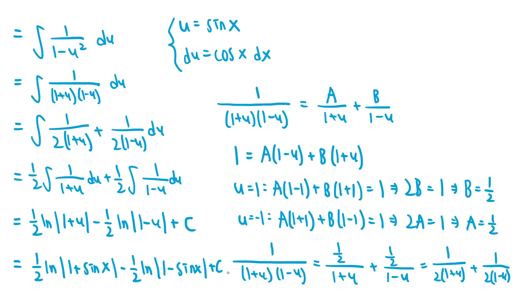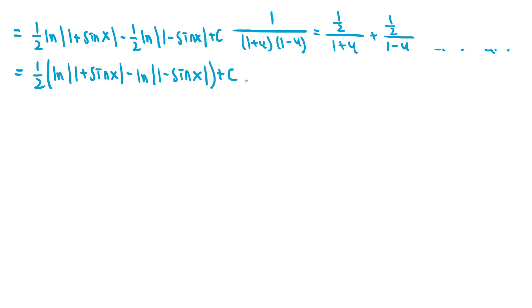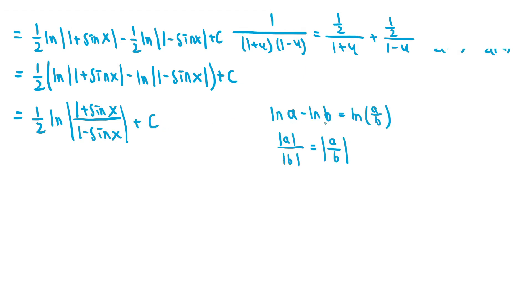We can factor out the 1 half from both terms and write this as 1 half times the quantity ln |1 plus sin x| minus ln |1 minus sin x|, plus c. Combining the logarithms using the property that ln a minus ln b equals ln of a over b, this becomes 1 half times ln of the absolute value of 1 plus sin x over 1 minus sin x, plus c. We also use the property that the absolute value of a divided by the absolute value of b equals the absolute value of a over b.